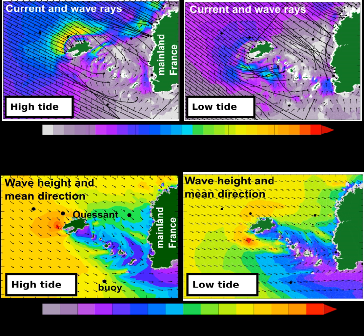Wind data are typically provided from a separate atmospheric model from an operational weather forecasting center. For intermediate water depths, the effect of bottom friction should also be added. At ocean scales, the dissipation of swells without breaking is a very important term. The output of a wind wave model is a description of the wave spectra, with amplitudes associated with each frequency and propagation direction. Results are typically summarized by the significant wave height, which is the average height of the one-third largest waves, and the period and propagation direction of the dominant wave.